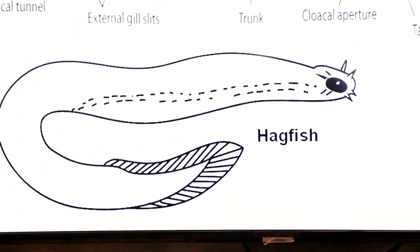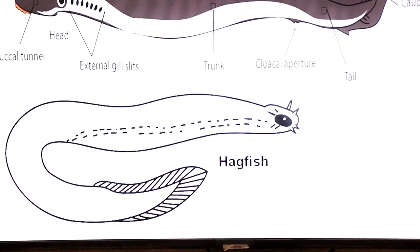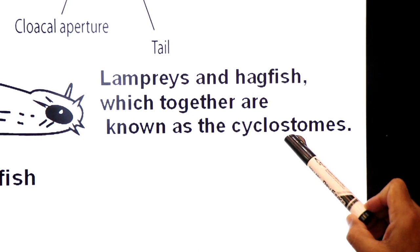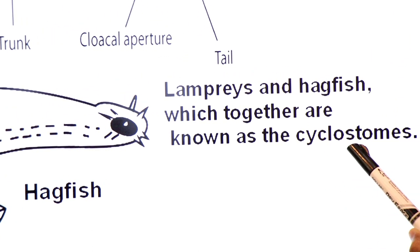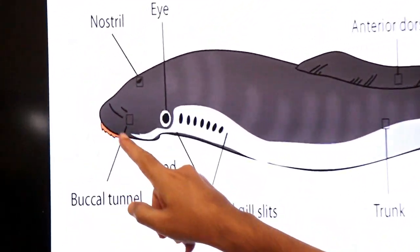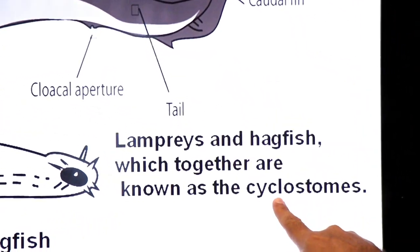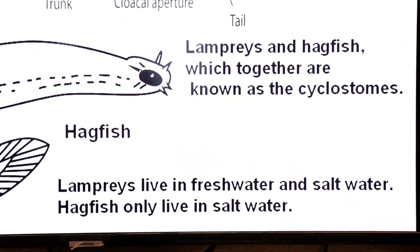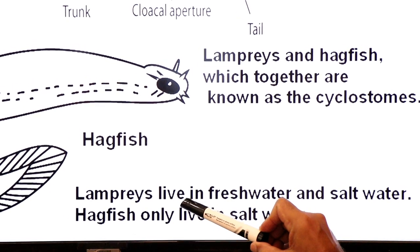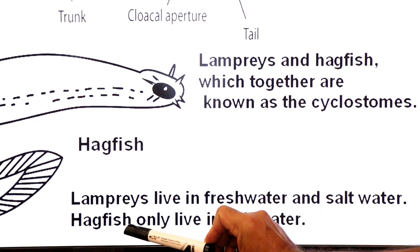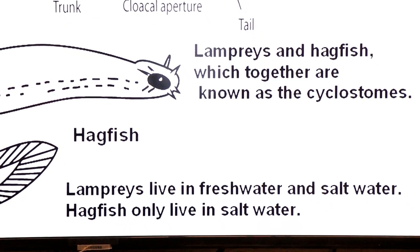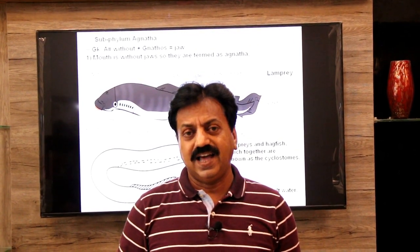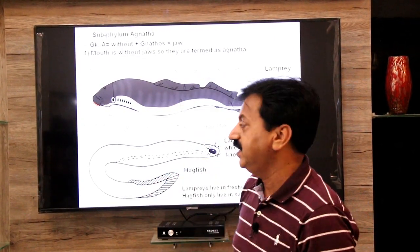Lampreys and hagfishes together are known as cyclostomes. 'Cyclo' means circular, 'stoma' means mouth — due to the presence of a circular mouth, they are placed in class Cyclostomata. Regarding their habitat: lampreys live in fresh water as well as salt water, but hagfish live only in salt water. Now we will discuss lamprey as a sanguivorous blood-sucker and hagfish as a scavenger.